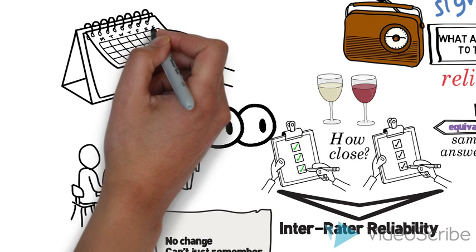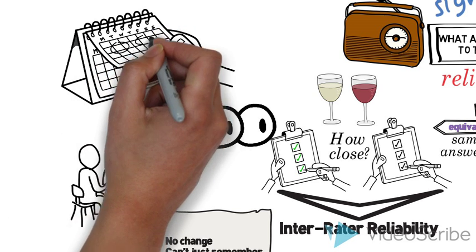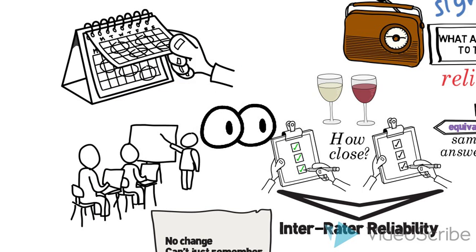And then reassessed it as the study went on to assure that the interviewers weren't starting to drift apart in the way that they asked the questions. Both uses of inter-rater reliability are very important.